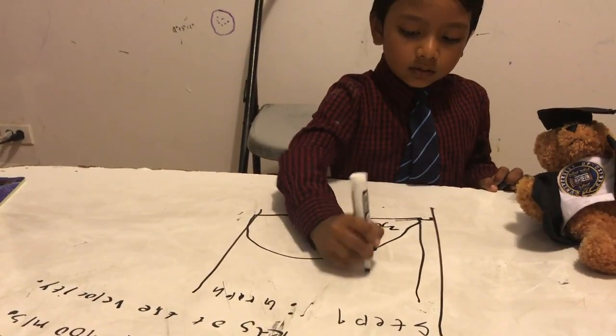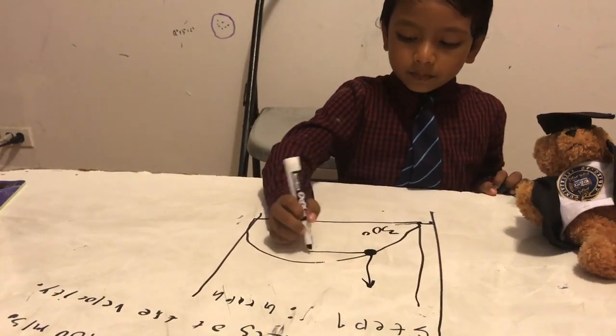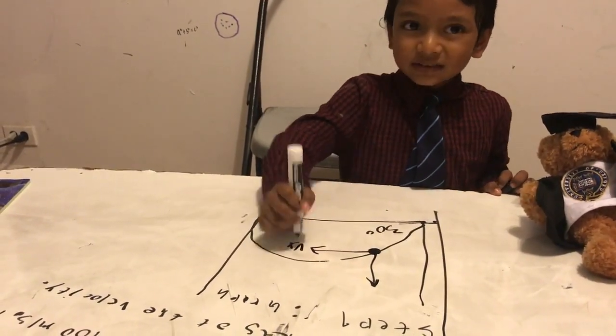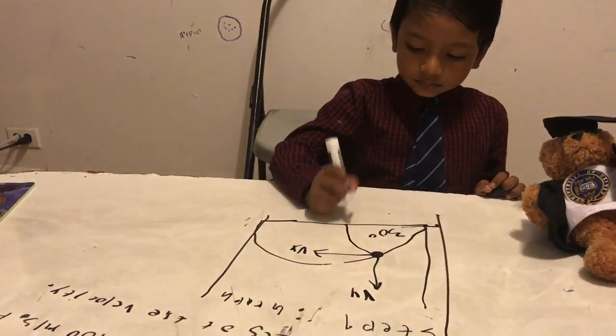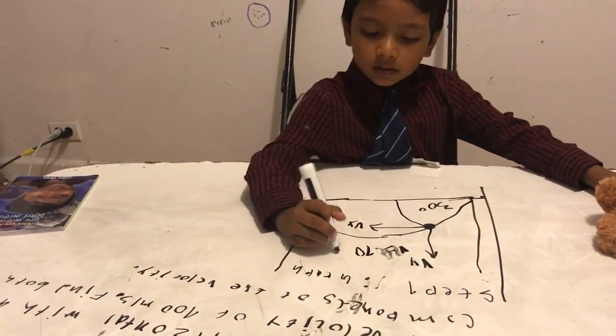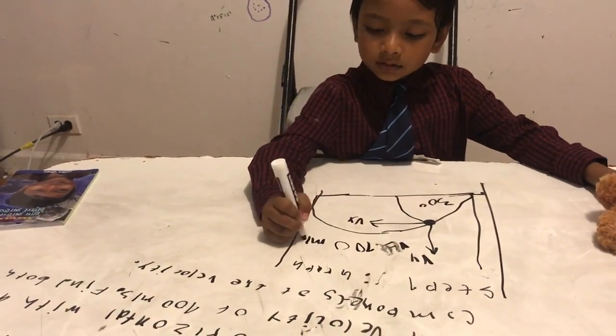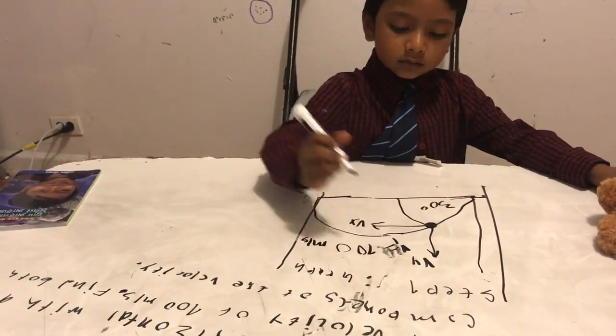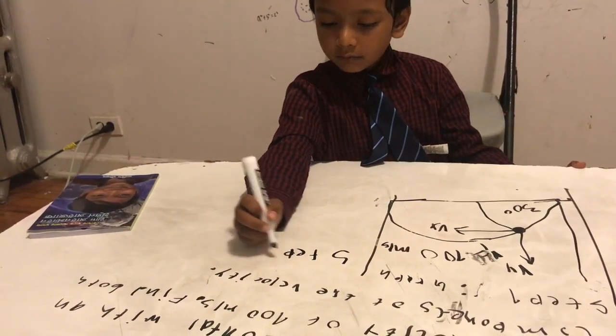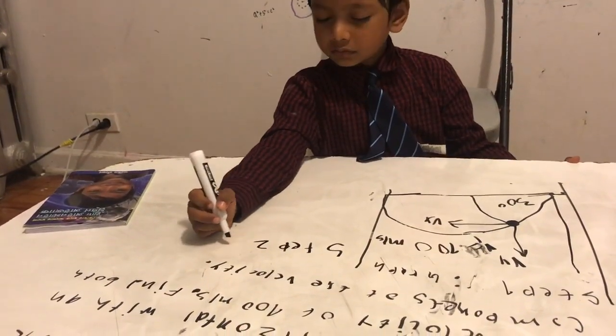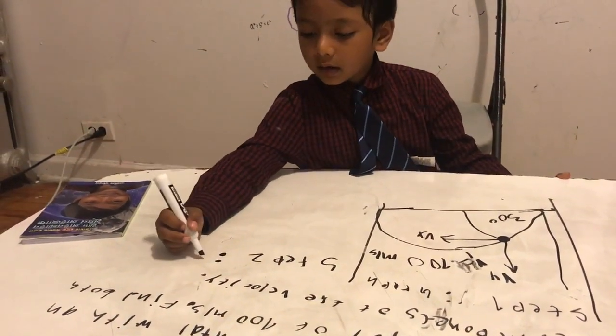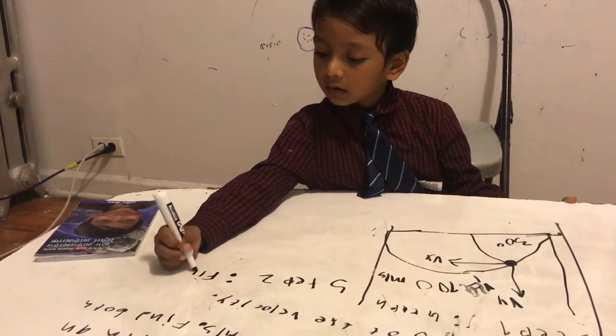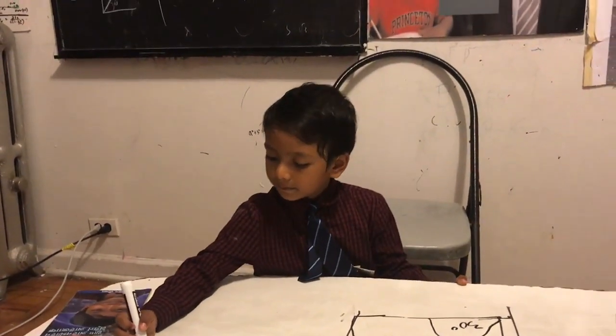So this is Vx, this is Vy. The velocity is 100 meters per second. Step two is to find both components, x and y.